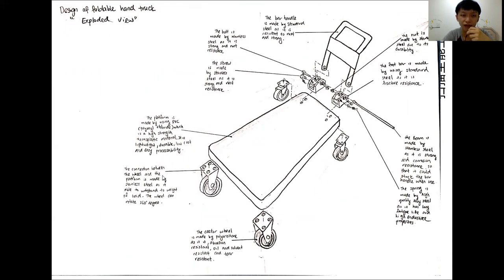The connection between the wheels and the platform is made by the stainless steel, which can withstand the weight of load. The wheels can rotate 360 degrees. The caster wheels made by the polyethane, as it is abrasion resistant, oil and solvent resistant, and tear resistant.